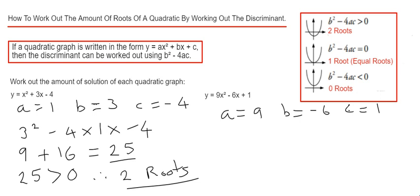Again if we substitute these into b squared minus 4ac, it would be minus 6 squared, so be careful with the negative.